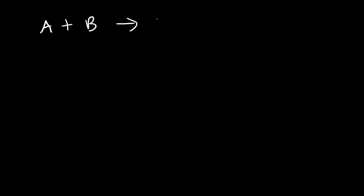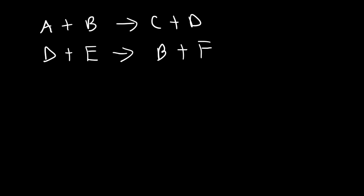In this video, I'm going to show you how to identify the intermediate and the catalyst in a reaction mechanism. Consider this example where A plus B reacts to produce C and D. And in the second step, D reacts with E to produce B and F. So in this reaction, what will you do to identify the intermediate and the catalyst?